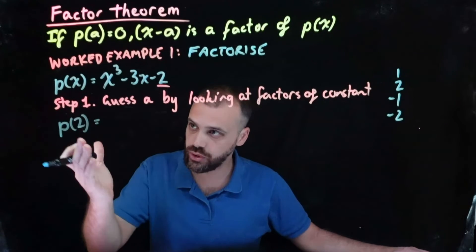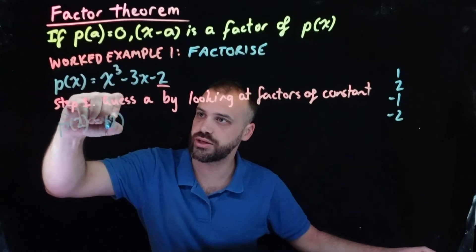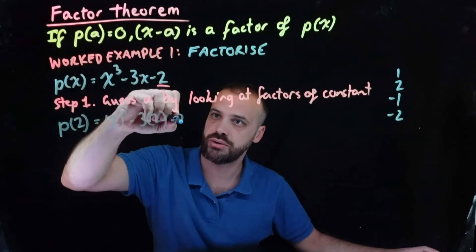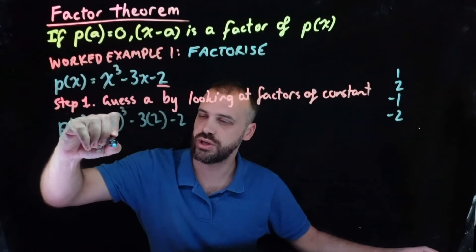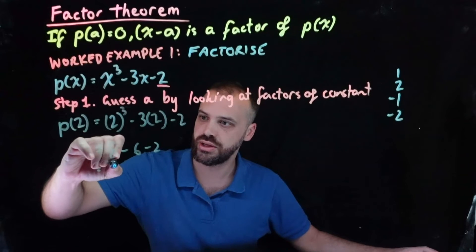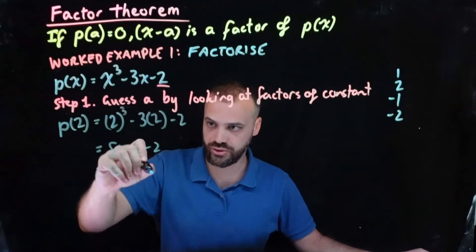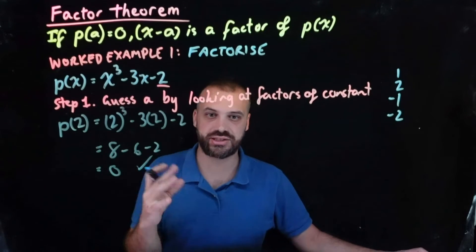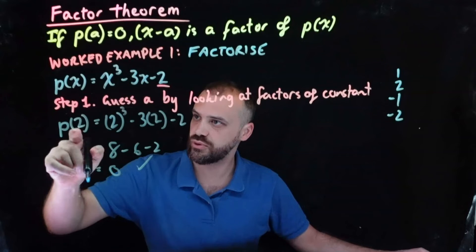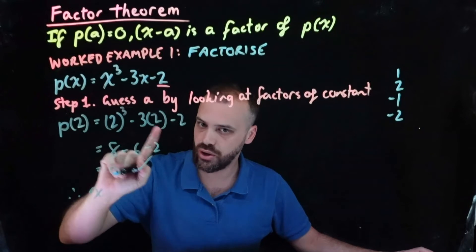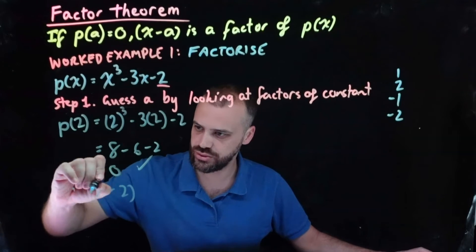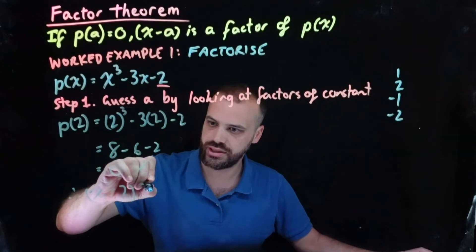Try again. What about p of 2? We get 2 cubed minus 3 times 2 minus 2, which gives us 8 minus 6 minus 2, which is 0. Yes, that's what we're looking for. So therefore, x minus 2 — not plus 2 — x minus 2 is a factor.